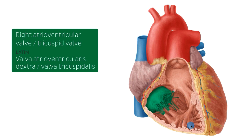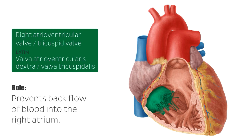We're seeing the tricuspid valve from the right ventricle. This structure has a very important role: the function of this valve is to prevent backflow of blood into the right atrium. So once the blood reaches the right ventricle, you don't want it to go back to the right atrium — this valve has an important function to prevent that from happening.